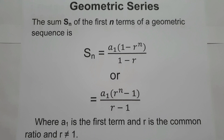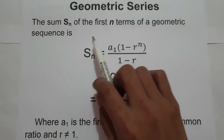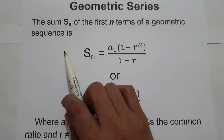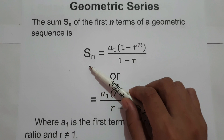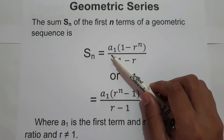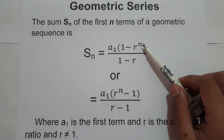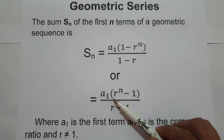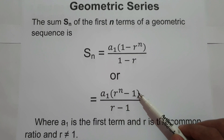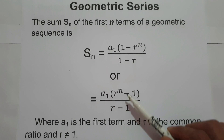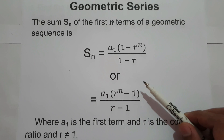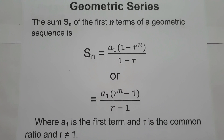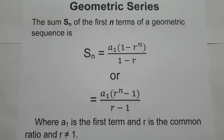When we say geometric series, the sum S sub n of n terms of a geometric sequence is written as S sub n equals a sub 1 times (1 minus r raised to n) all over (1 minus r), or a sub 1 times (r raised to n minus 1) all over (r minus 1). Here, a sub 1 is the first term, r is the common ratio, and r is not equal to 1.